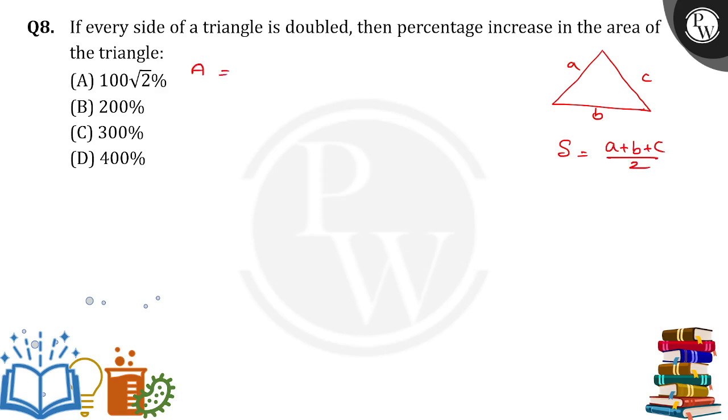Now, what is the area of this particular triangle? Square root of S into S minus A into S minus B into S minus C. This is the area.